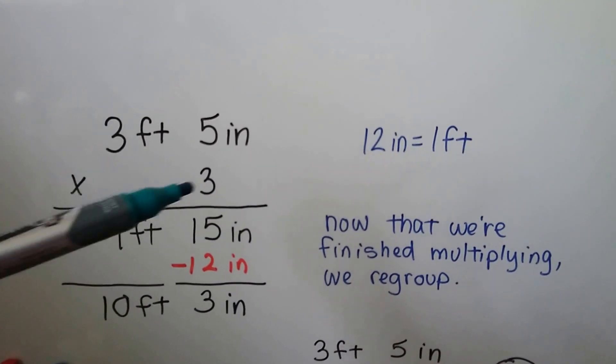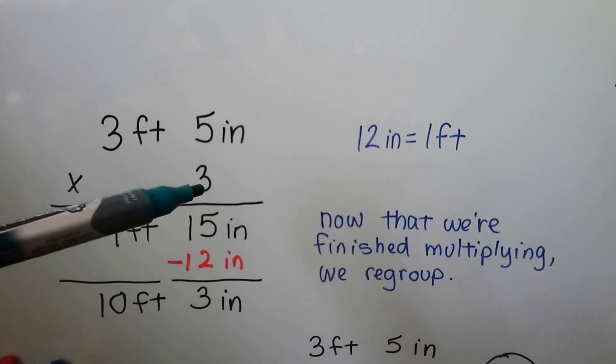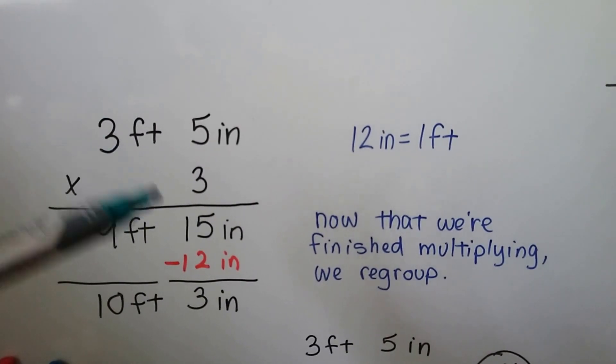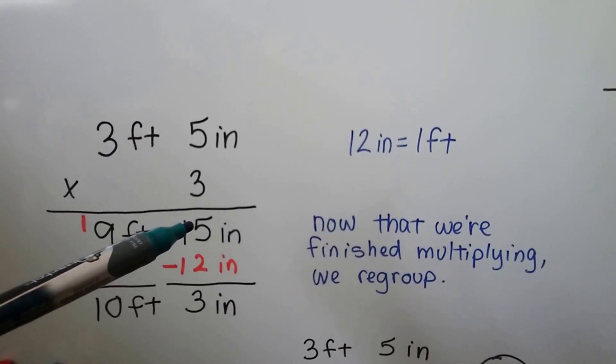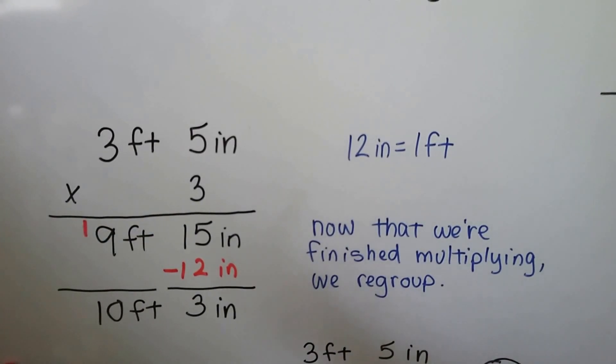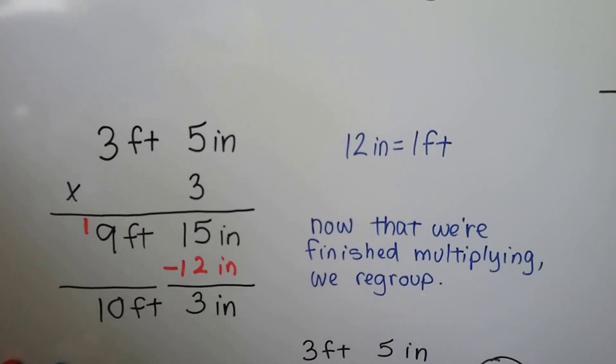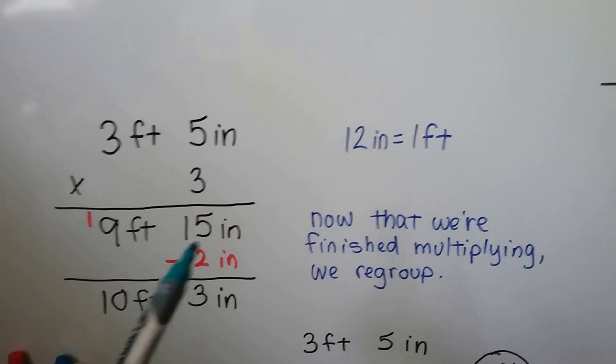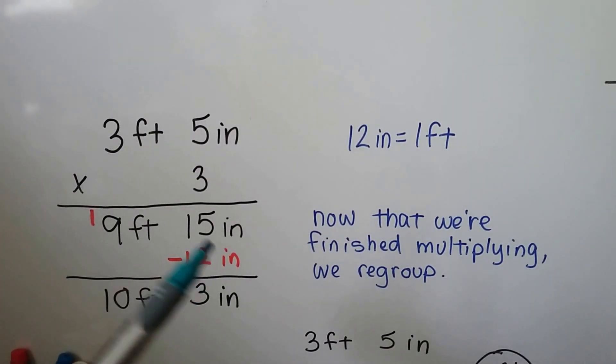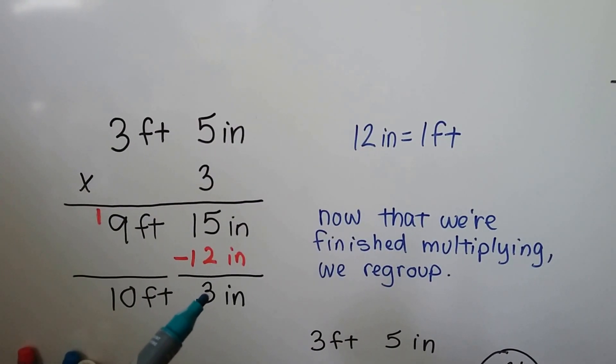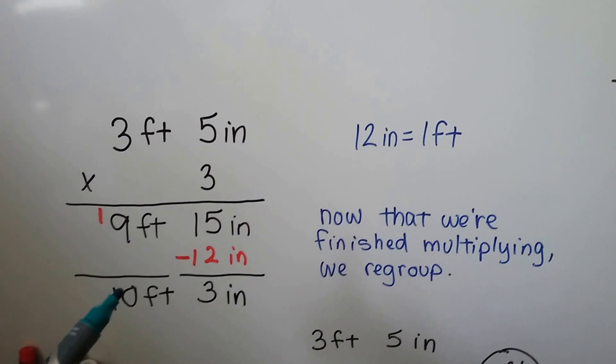We have 3 feet 5 inches and we want to multiply it by 3. 3 times 5 is 15. We're not going to regroup it here. We're just going to put our 15 down here. And 3 times 3 is 9. So we have 9 feet 15 inches. Now that we're finished multiplying, we regroup. 12 inches in 1 foot. So we can take a 12 out of this 15 and give that foot to the 9. That's going to leave us 3 inches, but now we have 10 feet on this side.